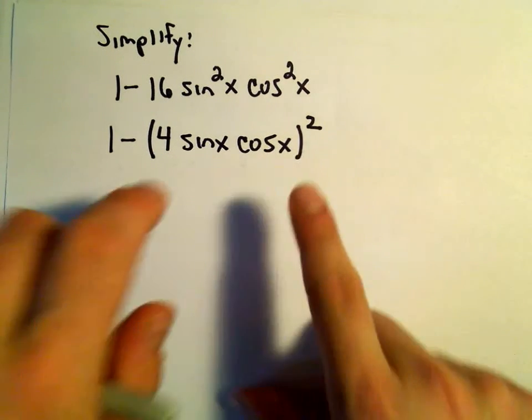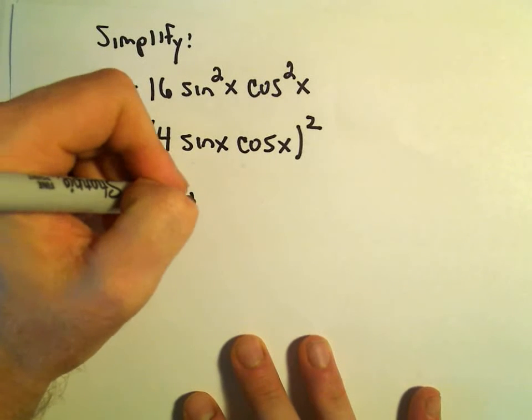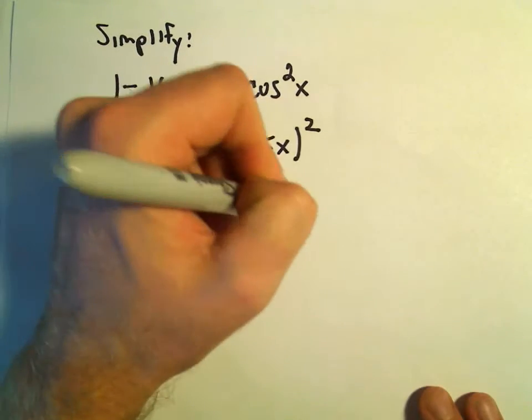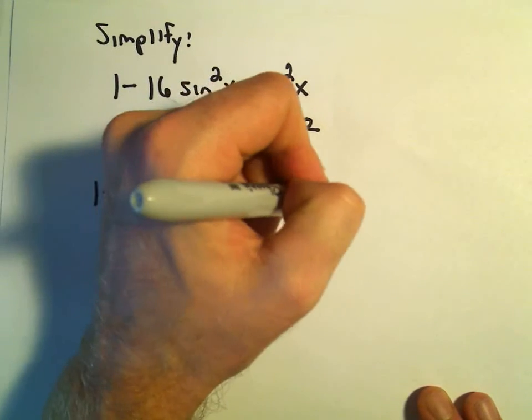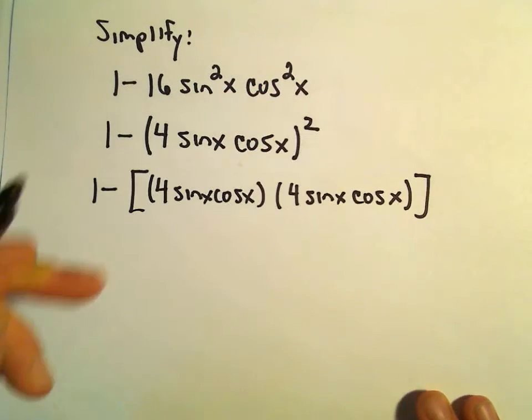I mean, if you square everything, we'll get our 16, our sine squared, and our cosine squared. So really we could rewrite this as 4 times sine x times cosine x times another 4 times sine x times cosine x.